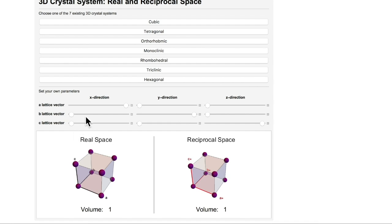This image is the real space unit cell, and this image is the reciprocal space unit cell. Similar to two dimensions, the real lattice vectors are A, B, and C, and the reciprocal lattice vectors are A star, B star, and C star. The points at the vertices represent atoms in the simple unit cell.